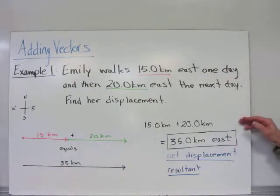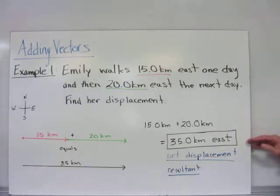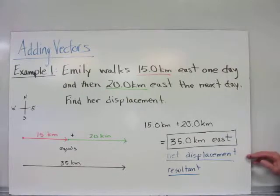Mathematically, they're in the same direction, so they're both positive quantities. And her displacement is 35 kilometers east. We call that the net displacement, as well as the resultant. You can use either of those terms.